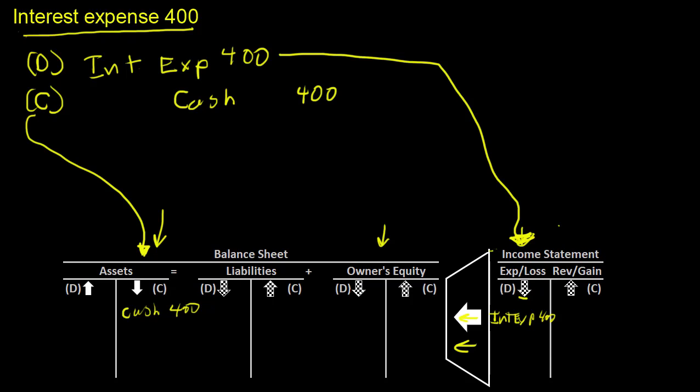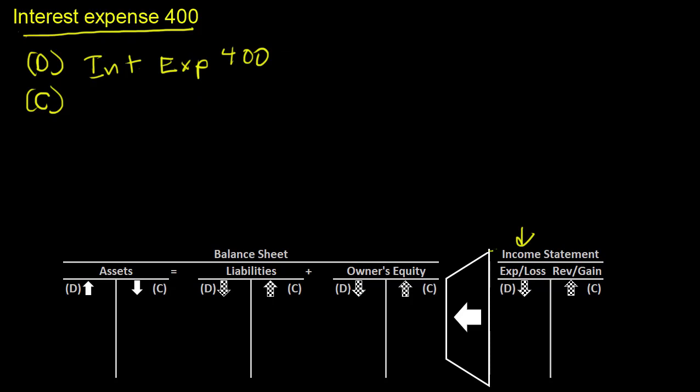Well, that's great. Everything's in balance. But what if we don't actually have to pay this interest expense right now? What if we're just experiencing it and want to write down that we have $400 we're going to have to pay in interest expense, but we haven't paid cash?